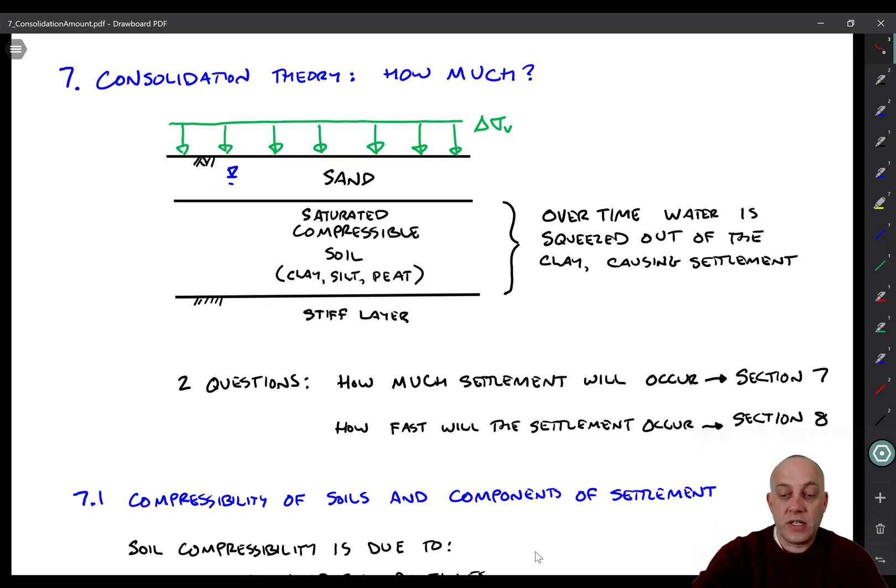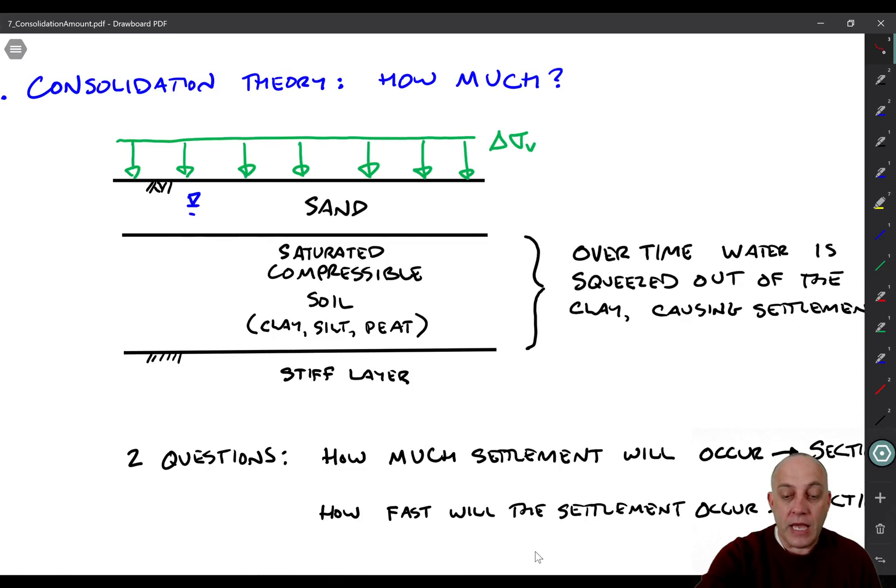So here's a sketch that shows what we have. Let's say that we have this saturated, compressible soil layer down there. It could be clay, silt, peat, something that's saturated, and when we load it, will compress quite a bit. And then I put some sand on top of it here because it turns out we always have to start with some effective stress at the top of the layer, and it just makes it much cleaner at this point to have another layer on top. And notice that the water table is up here, so this whole layer is saturated.